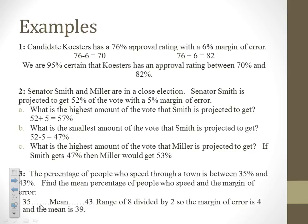Example number one: candidate Kestras has a 76% approval rating with a 6% margin of error. That means we are 95% certain that Kestras has an approval rating between 70% and 82%. That's a big range, which probably means we didn't have a very big sample size.